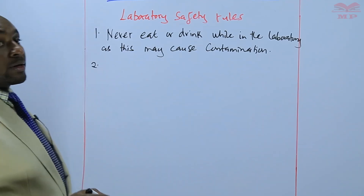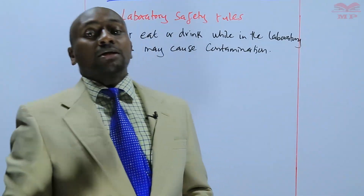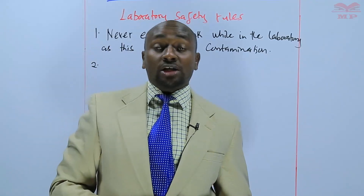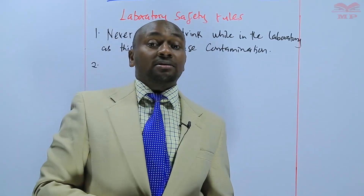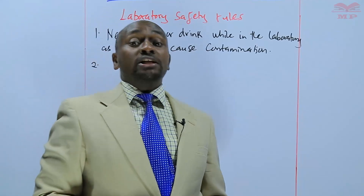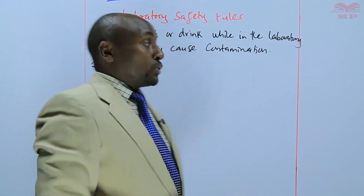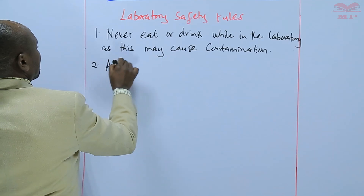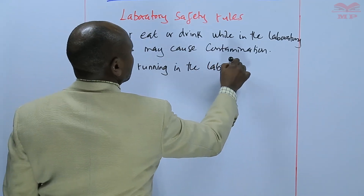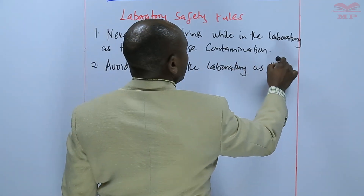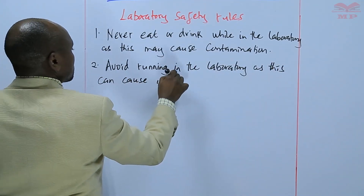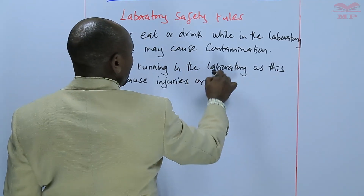Safety rule number two: never run around in the laboratory, because when you run around you can easily fall and injure yourself, or you can easily break the apparatus. Remember, most of them are made of glass. You should also avoid injuring the person next to you, so avoid running in the laboratory as this can cause injuries or breakage.